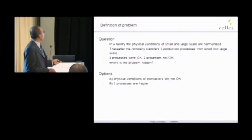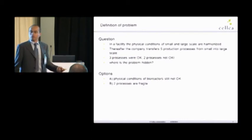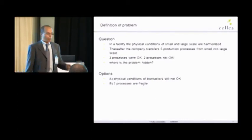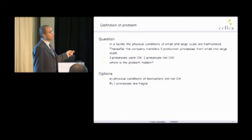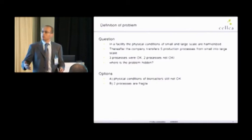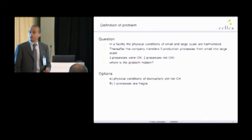That means titer or product quality is not comparable. What should we do? Where is the problem hidden? We have done the characterization already. What should we do then? Why do we have three processes which run smoothly and two of them not?